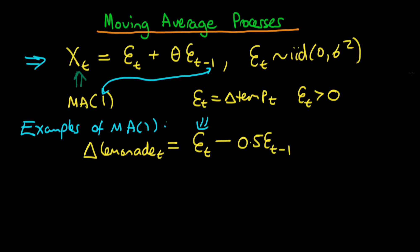If the change in temperature at time t is greater than 0, then epsilon t is greater than 0. Assuming the change in temperature in the last period was 0, this means there is going to be an increase in demand for lemonade — so delta lemonade at time t is going to be greater than 0.